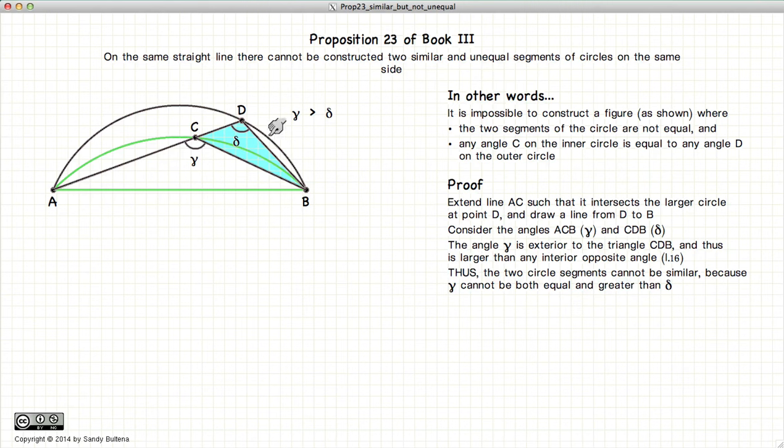Thus we have demonstrated that two unequal circle segments cannot be similar. In other words, C and D cannot be the same angle.